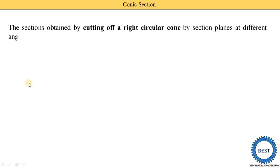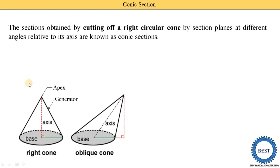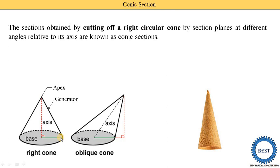The section is obtained by cutting of a right circular cone. The right circular cone means the axis of the cone is at 90 degrees. There are two types of cones — the right angle cone and the oblique cone. These cones have a similar shape like an ice cream cone. A cone has a circular base, an apex, and generators. The generator is a straight line which connects the apex and the base. A cone has a number of generators.